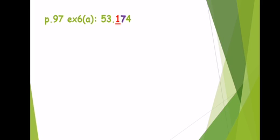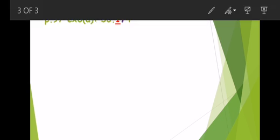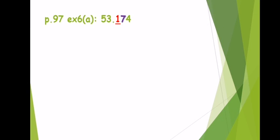Let's see page 97, exercise six, part eight a. We have fifty three point one hundred seventy four. Round to the nearest ones. The ones digit is fifty three. The next digit is one, and one is smaller than five, so we keep the number as it is — fifty three.